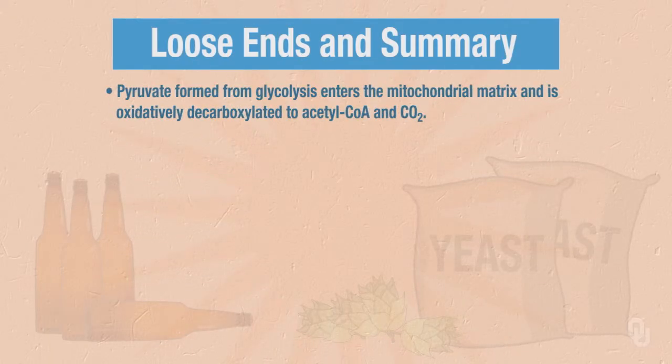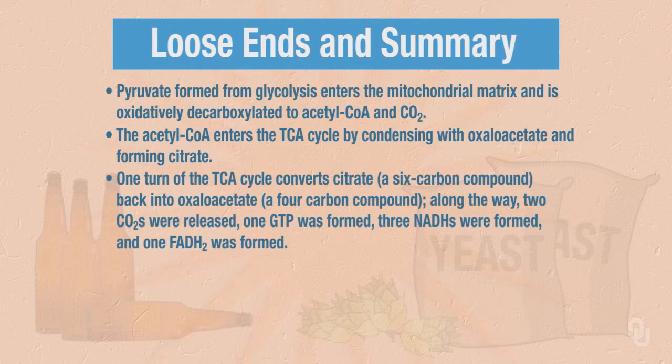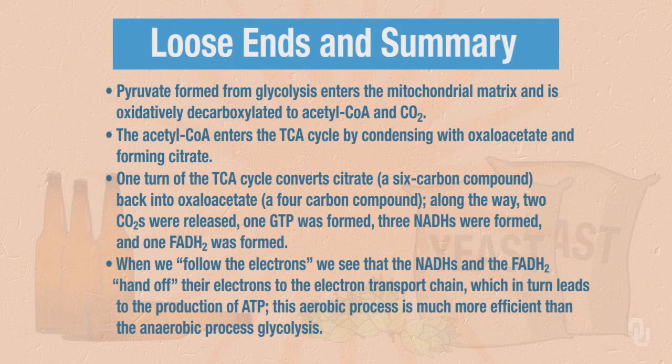So now we're ready to summarize our discussion. We saw that the pyruvate, which was formed in glycolysis, enters the mitochondrial matrix and is oxidatively decarboxylated to acetyl-CoA and carbon dioxide. The acetyl-CoA enters the citric acid cycle by condensing with oxaloacetate and forming citrate. One turn of the TCA cycle converts citrate, a six-carbon compound, back into oxaloacetate, a four-carbon compound. Along the way, two carbon dioxides were released, one GTP was formed, three NADHs were formed, and one FADH2 was formed. When we follow the electrons, we see that the NADHs and the FADH2 hand off their electrons to the electron transport chain, which in turn leads to the production of ATP. This aerobic process is much more efficient than the anaerobic process of glycolysis.